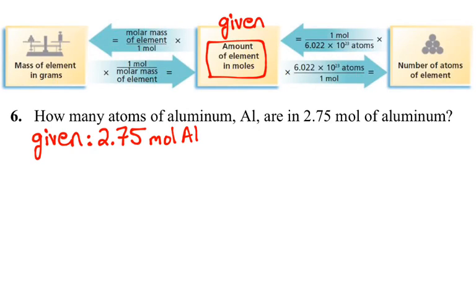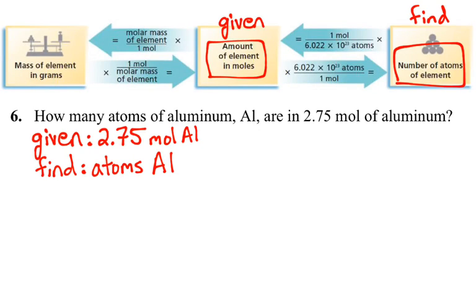And it is also helpful to make sure we understand where we need to get to with this problem, or in other words, what are we asked to find? So we are asked to find atoms of aluminum. So we have a place up here in our diagram as well for atoms of aluminum. So now we have a pathway to follow to get from moles to atoms.